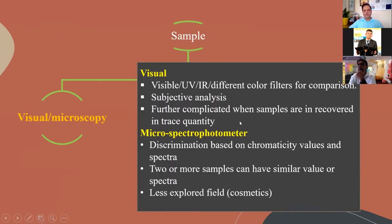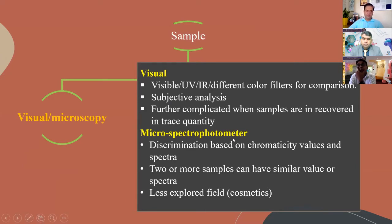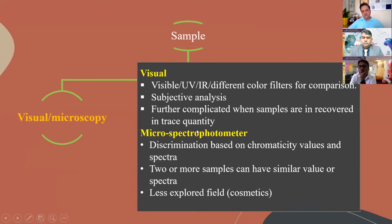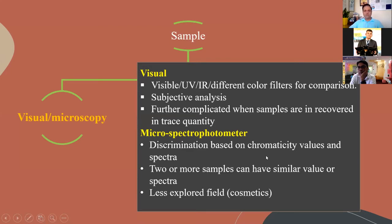In visual or microscopic techniques, we use different types of light — visible light, UV light, IR light — using different color filters for color comparison. This type of analysis is highly subjective in nature, which is not desired when submitting evidence in court. The process becomes further complicated when samples are recovered in trace quantities, as it is very difficult to analyze their colors. Another approach is using a micro-spectrophotometer, which discriminates samples based on chromaticity values of spectra, though two or more samples can have similar spectra, causing ambiguity. This field is also less explored in cosmetic examination.